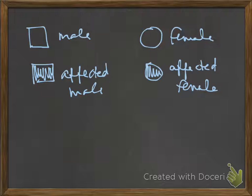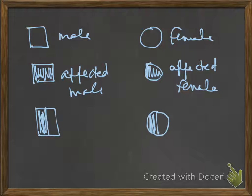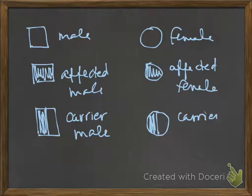One of the things they do on the OGT is they actually will show a half-colored circle or square. That's a carrier. That's not used in most other places that I know of, but it is used in some places.